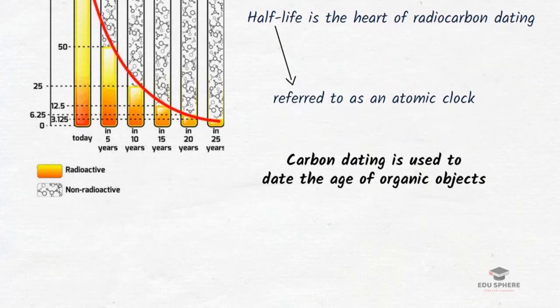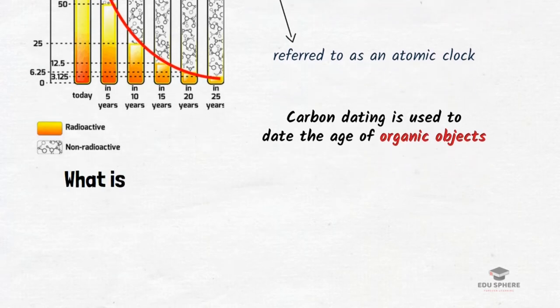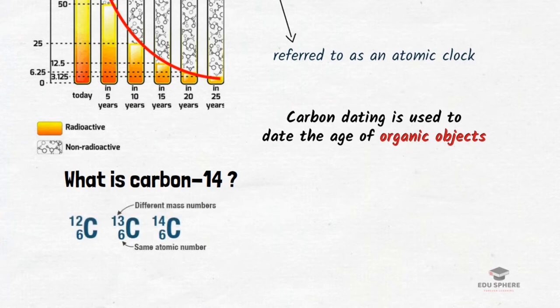Archaeologists and geologists use half-life to date the age of organic objects in a process known as carbon dating. Since all living things contain carbon, carbon-14 is a common isotope used to primarily date items that were once living. Now what is carbon-14? Like most elements occurring in nature, carbon exists in more than one isotopic form. It has three isotopes, carbon-12, carbon-13 and carbon-14.